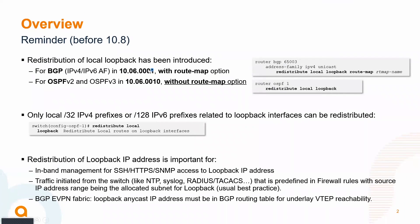For OSPF, the redistribute local loopback was introduced in maintenance release 10.6.0.0.10, which is why it was not covered in the TOI. For that OSPF-specific case, there was no route-map option as of 10.6.0.0.10. What we covered today is that only /32 IPv4 prefixes or /128 IPv6 prefixes are related to loopback interfaces.